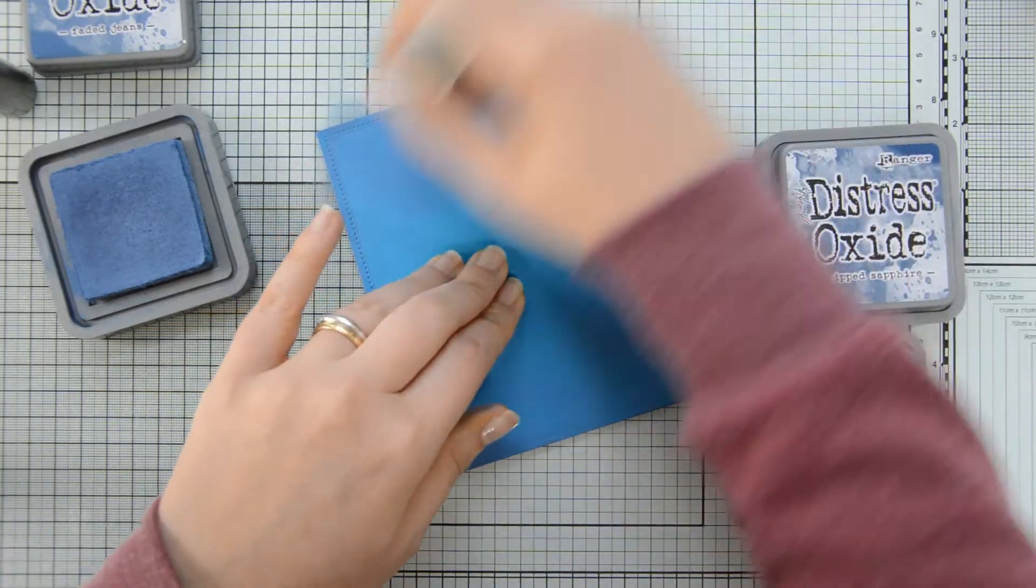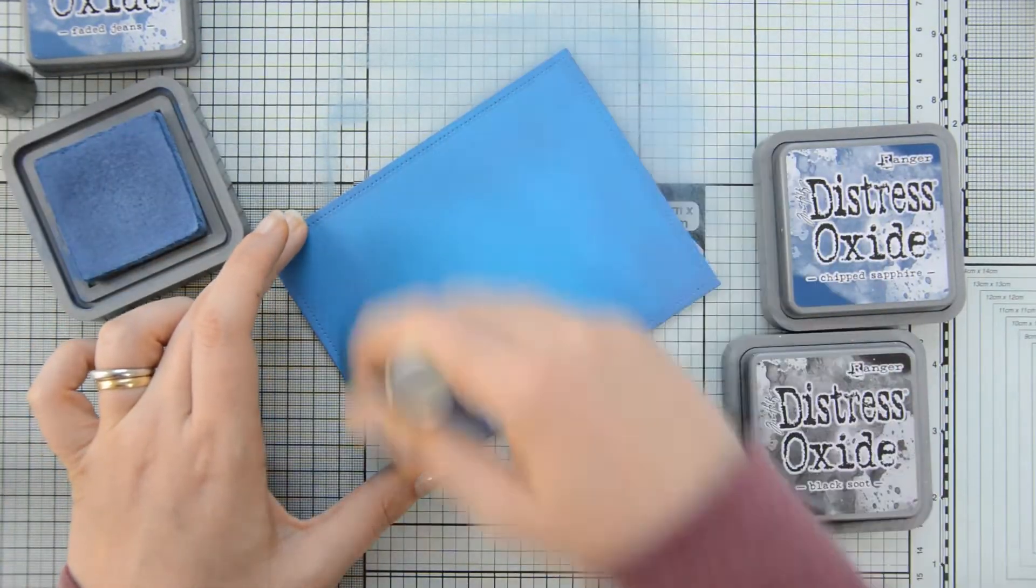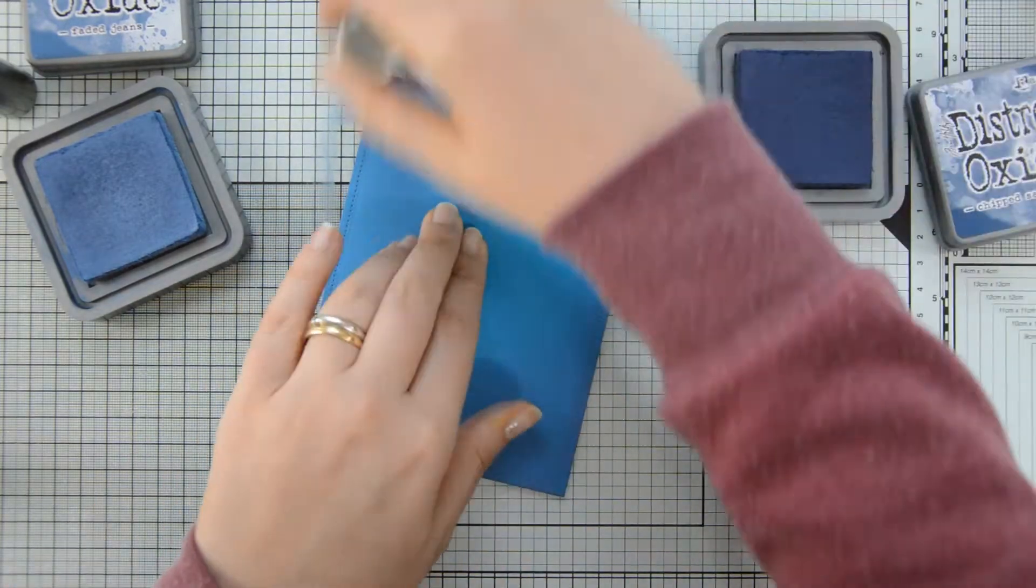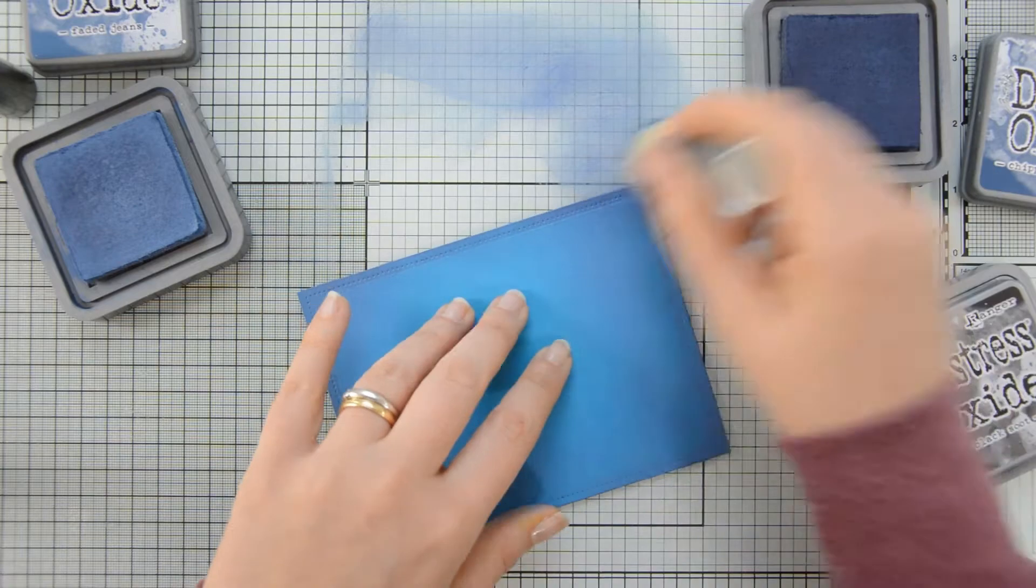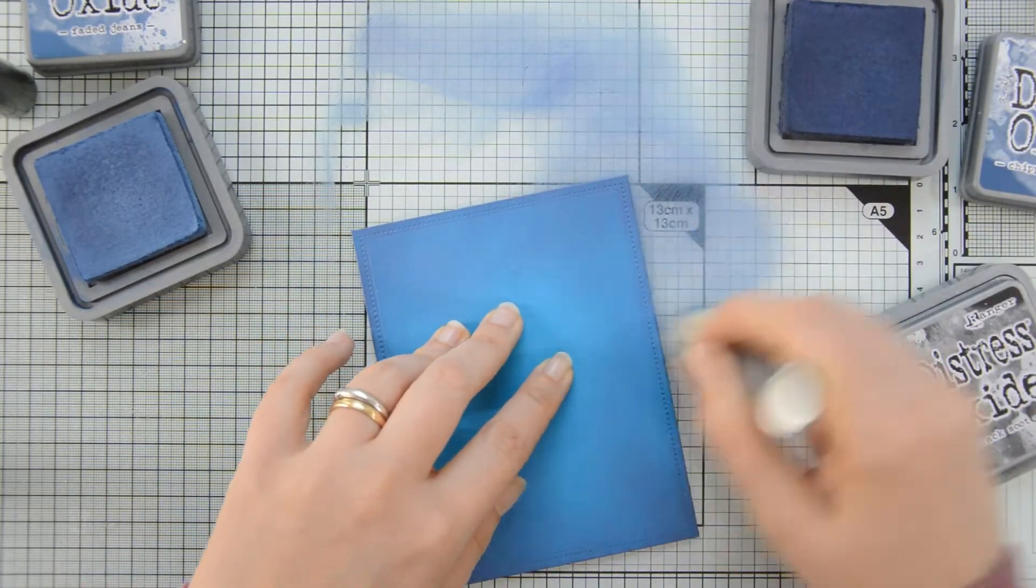As you can see, I am not blending the inks over the entire surface, but I am leaving a spot as is. And that will be where I will have my focal point in my sky and you will see that later on.